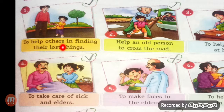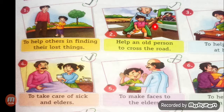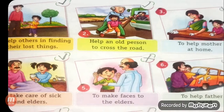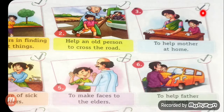To help others in finding their lost things — right. Number 2: help an old person to cross the road. Children, you are being good if you are helping someone to cross the road. It is also right, so put a right sign. Third: to help mother at home — of course, yes. It is a good quality. You are being good to your mother if you are helping her. Again, the sign of right.